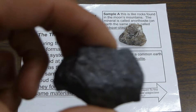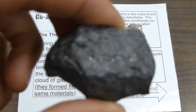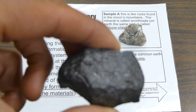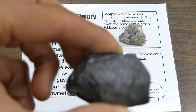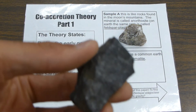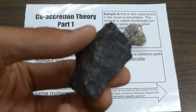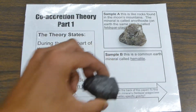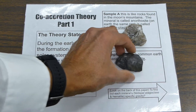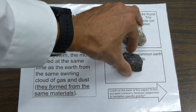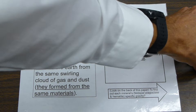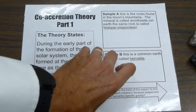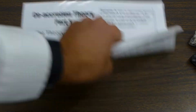This is a rock that's common on earth; it's called hematite. You're going to need the specific gravities of both these minerals. That information is located on the back here.